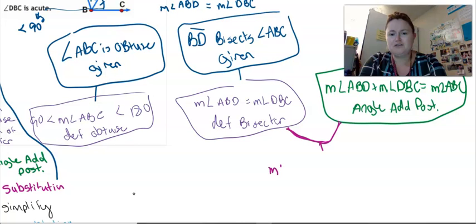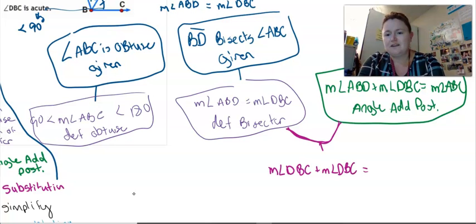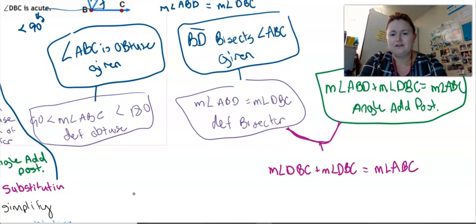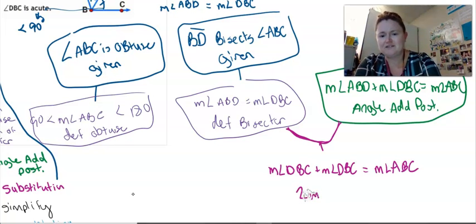So I'm going to replace this ABD with DBC. So it'll be the measure of angle DBC plus the measure of angle DBC equals the measure of angle ABC. Well, DBC plus DBC, that's just going to be two DBCs. Oops, I skipped a step there. I've got to write down my why here.